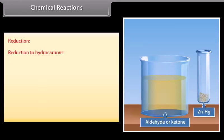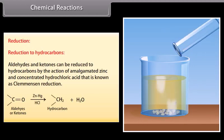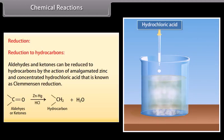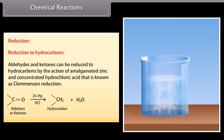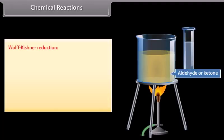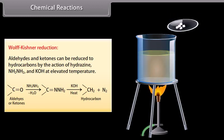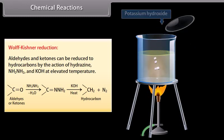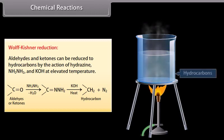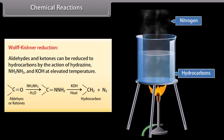Reduction to hydrocarbons: aldehydes and ketones can be reduced to hydrocarbons by the action of amalgamated zinc and concentrated hydrochloric acid; this is known as Clemmensen reduction. Wolff-Kishner reduction: aldehydes and ketones can also be reduced to hydrocarbons by the action of hydrazine and potassium hydroxide at elevated temperature.